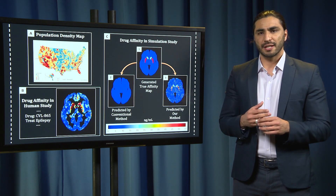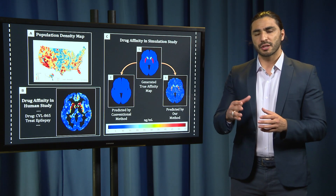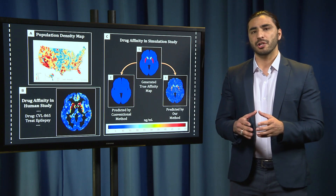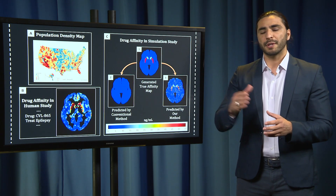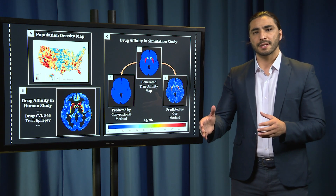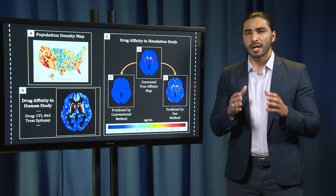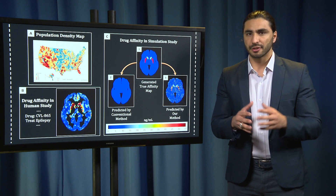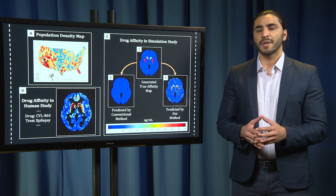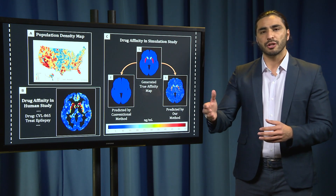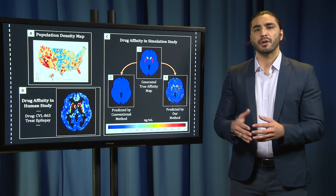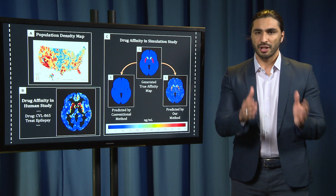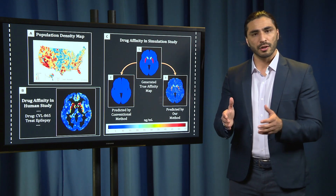In my research, I use positron emission tomography, or PET imaging, to optimize the process by selecting appropriate dosing in preclinical trials. This could reduce the number of clinical trials needed, reducing time and cost.